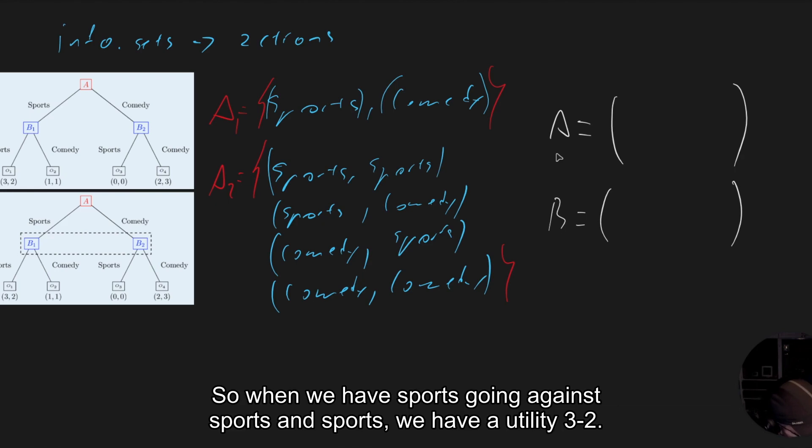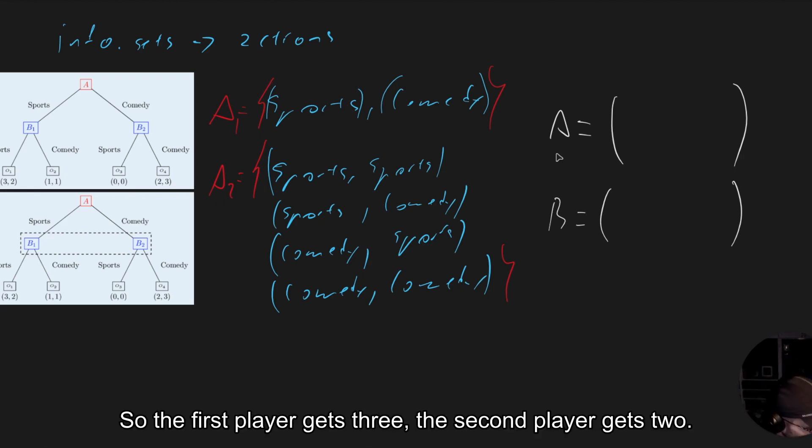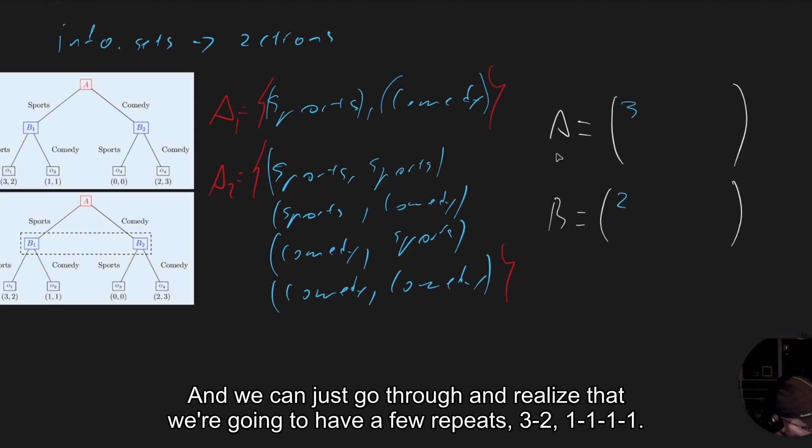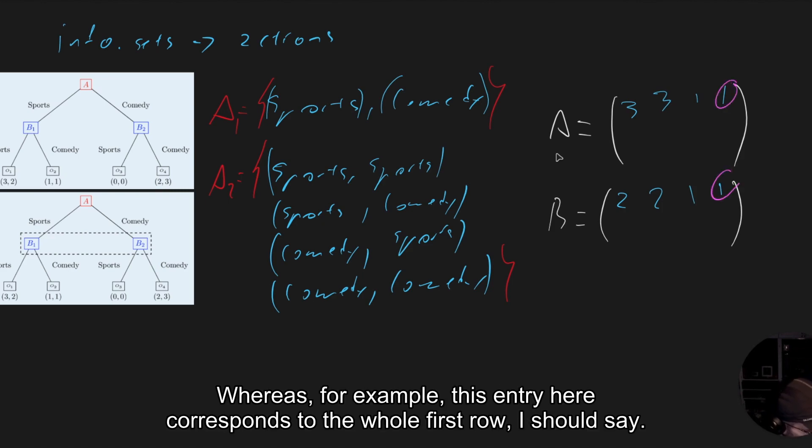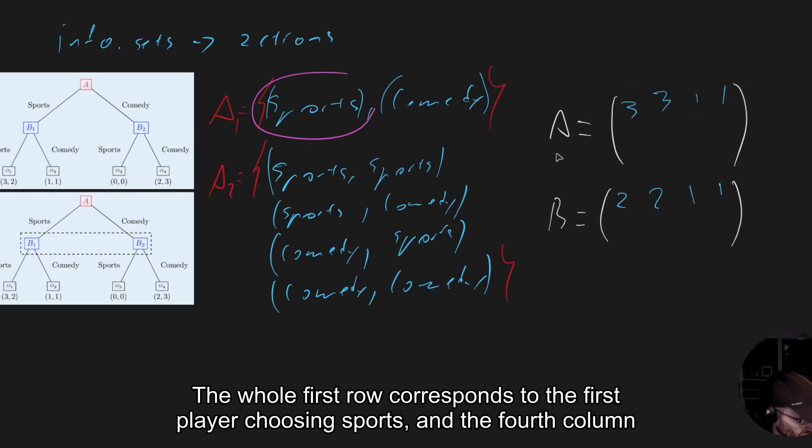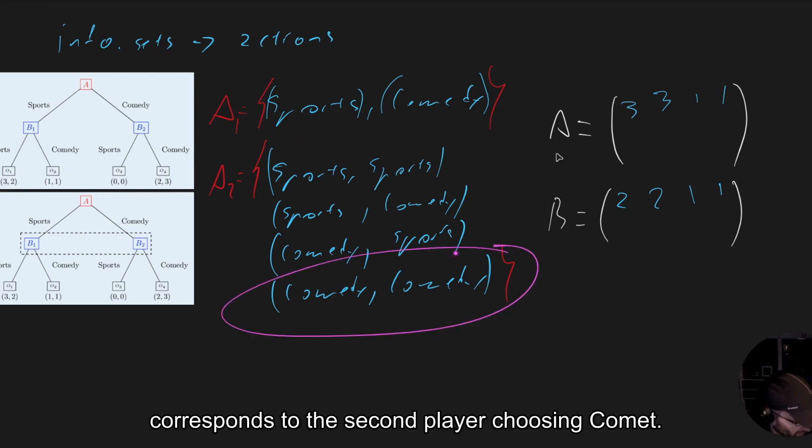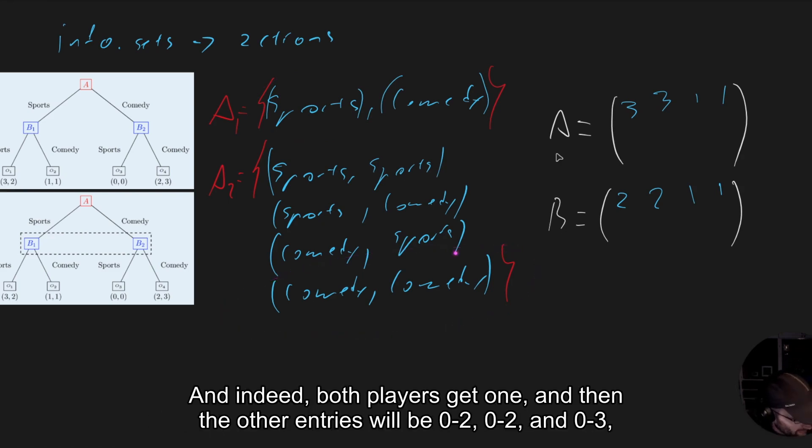When we have sports going against sports and sports, we have a utility three, two. And so the first player gets three, the second player gets two. And we can just go through and realize that we're going to have a few repeats, three, two, one, one, one, one, one, one. This entry here corresponds to the whole first row. The whole first row corresponds to the first player choosing sports, and the fourth column corresponds to the second player choosing comedy. And indeed, both players get one.